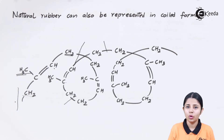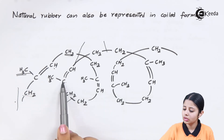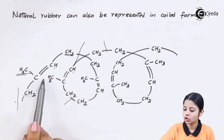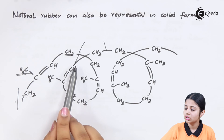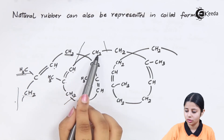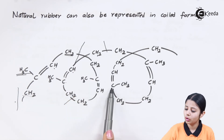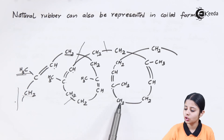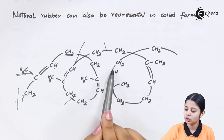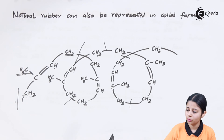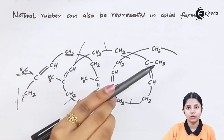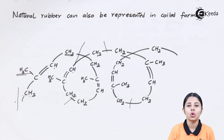Looking at one more monomer: C=C, H is here, CH3 on top. The CH2 which was down in the cis position is here, and the other CH2 which was down in the cis position is here. Similarly for the next segment: C=C, CH3, and CH2 groups in the cis position. This is the third monomer. All these monomers coil up together to form the polymer which is natural rubber.